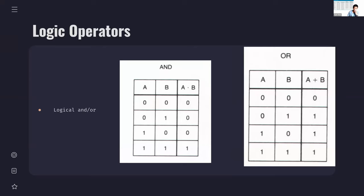These logic operators are a bit more complex. We have logical AND and logical OR. The cheat sheet has a useful implementation for AND and OR. Basically, AND means that if both A and B are true, then A AND B is true. If A OR B is true, that means if any one of A or B is true, then the result is true.